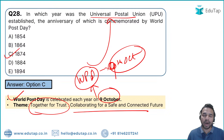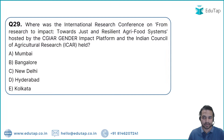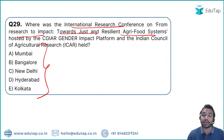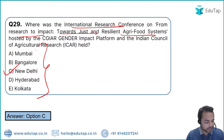Question 30: The International Research Conference on 'From Research to Impact: Towards Just and Resilient Agri-food Systems' was held in New Delhi — Option C. Well done to everyone who gave the right answer.